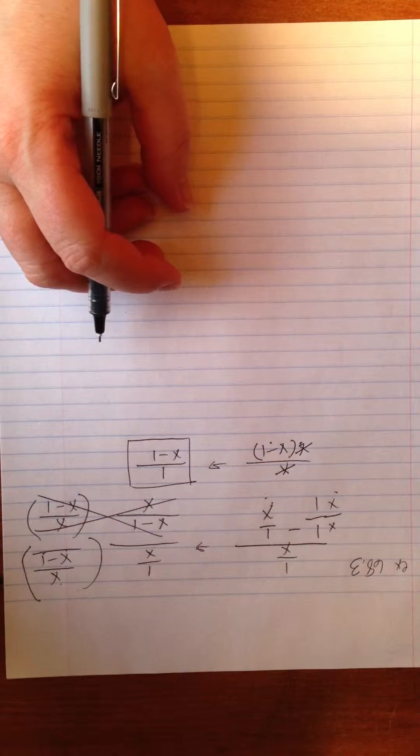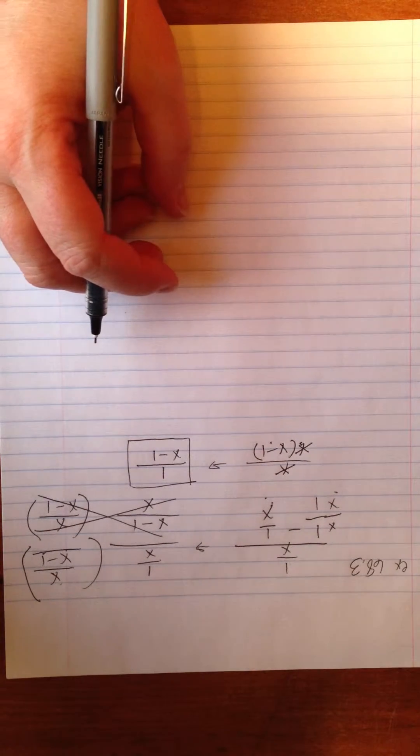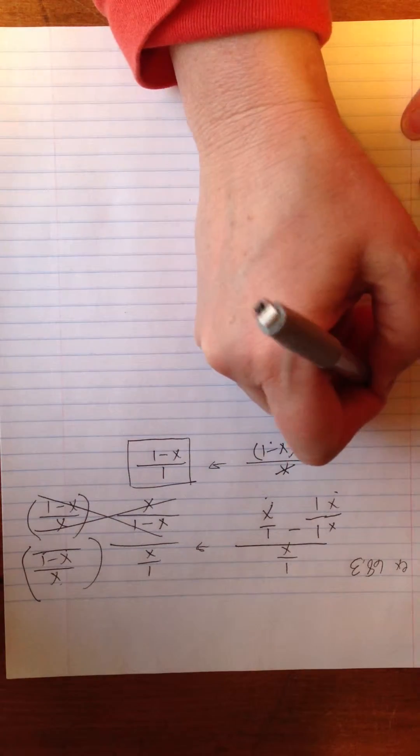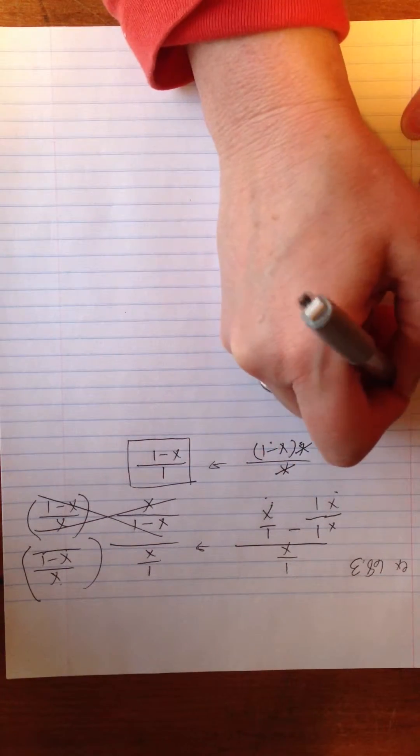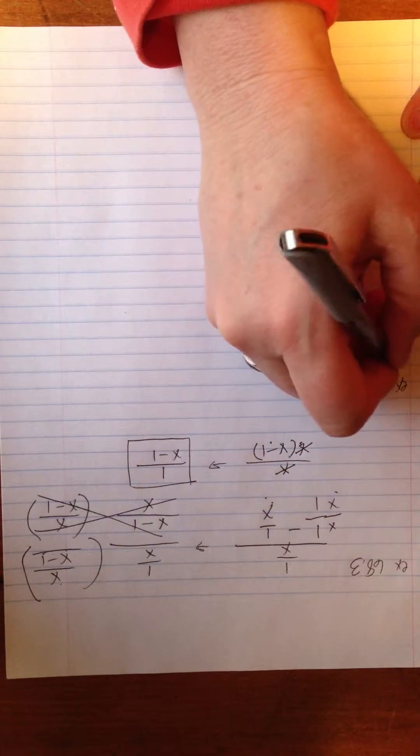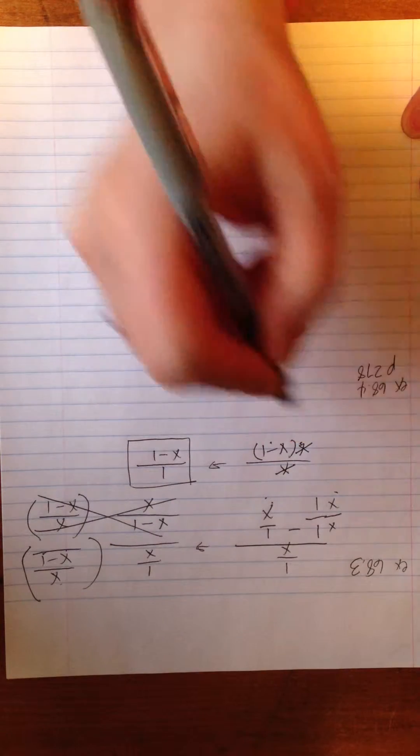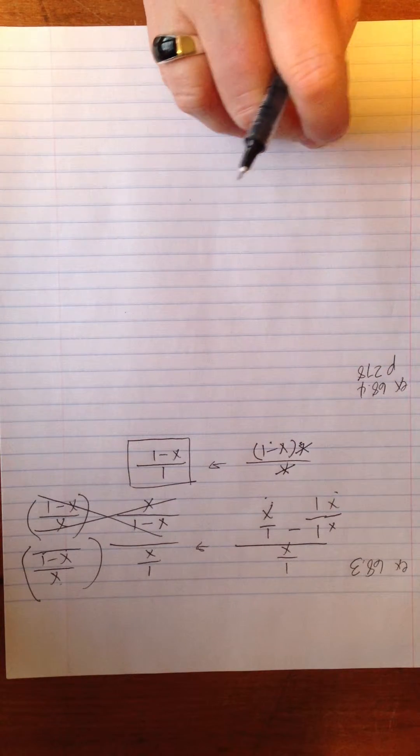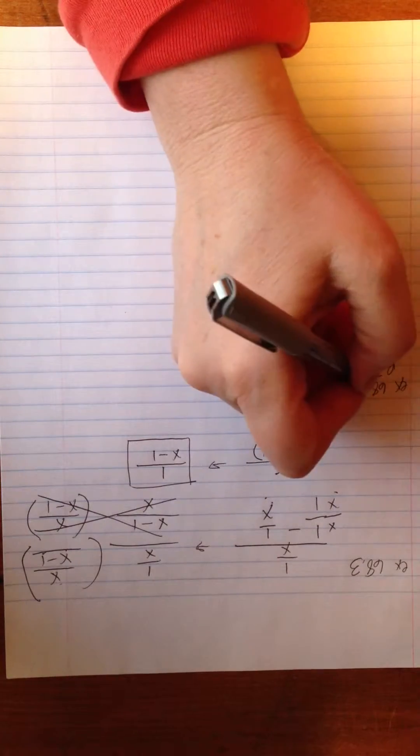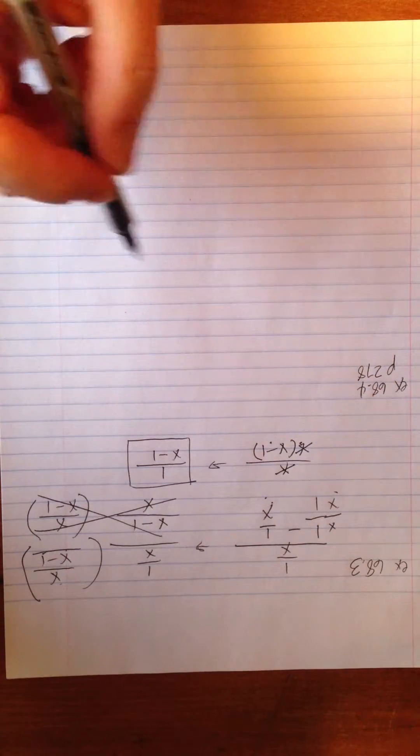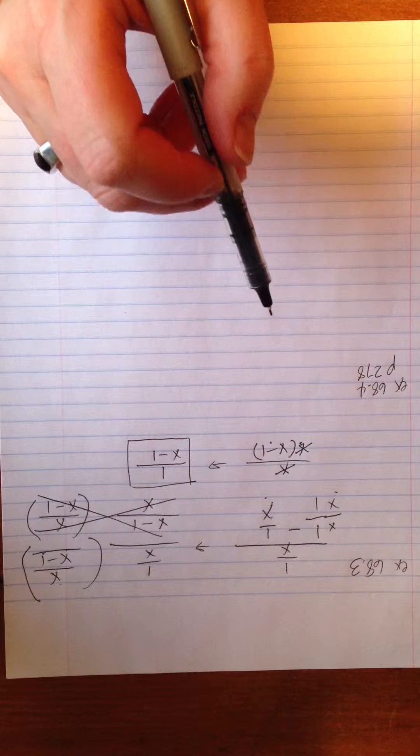Alright, I'm going to have you guys do 68.4 together. So go ahead and pause me and do example 68.4. That's on page 278. And then come back when you're done and I want to just show you one more thing in example 68.5 that's slightly different. So go ahead and pause me. Work that problem. Come back when you're done.